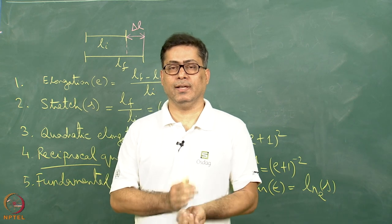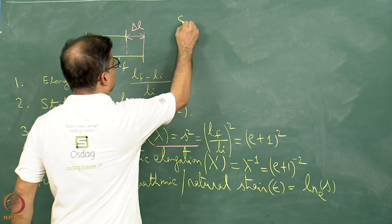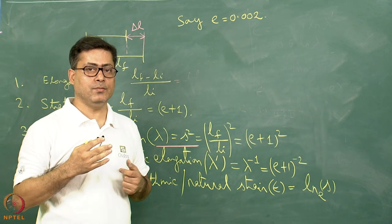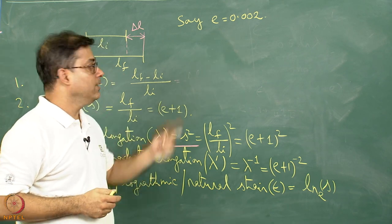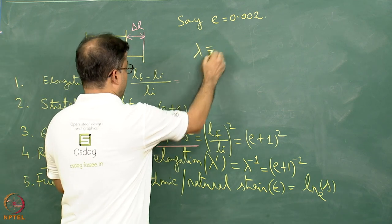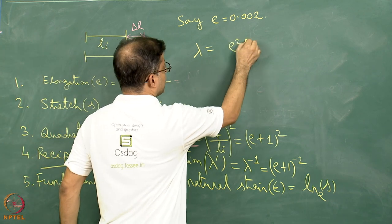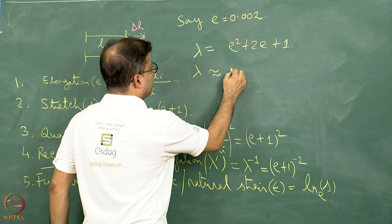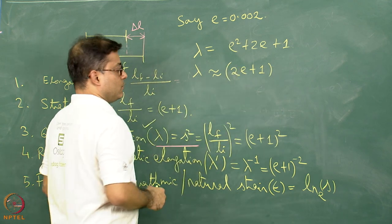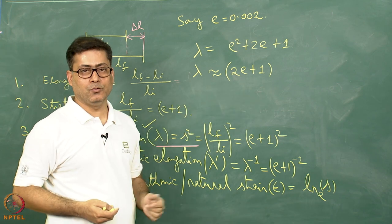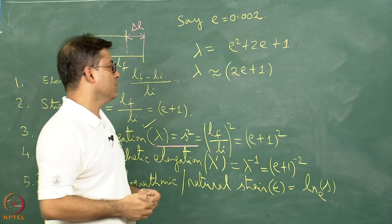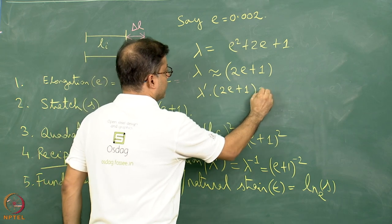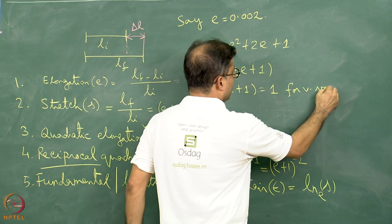If E is very small, say E equals 0.002, approximations can be made. Expanding lambda equals (E + 1)² gives E² + 2E + 1. Since E is very small, E² can be neglected, so lambda is approximately equal to 2E + 1. Similarly, lambda dash multiplied by (2E + 1) equals 1 for very small E values. A common exam question asks: under what condition is lambda approximately 2E + 1? The answer is when E is a very small fraction.